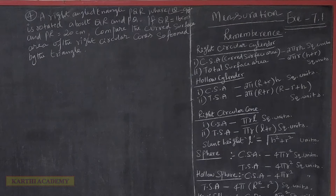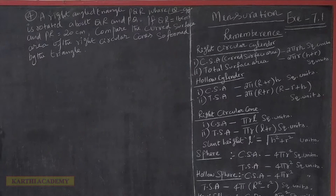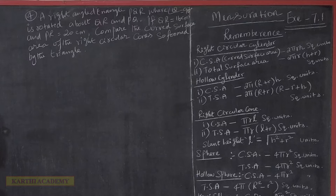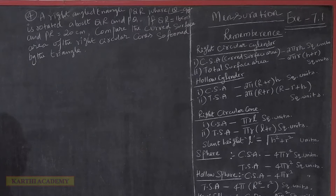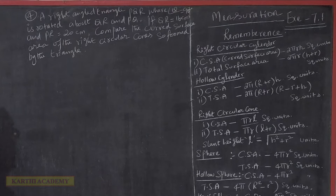Dear students, I am Kathi Gay. Unit 7, Exercise 7.1. On the right angle triangle PQR where angle Q is equal to 90 degrees, the triangle is rotated about QR and PQ. If QR is equal to 16 cm and PR is equal to 20 cm, compare the curved surface area of the right circular cone formed by the triangle.